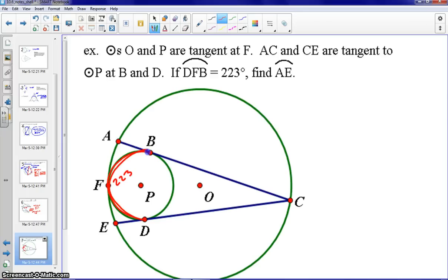Okay, so let's take a look here. First of all, using the fact that we have the measure of arc DFB equal to 223 degrees, we can find, I'm switching colors here, arc BD by subtracting that from 360 and get this to be 137 degrees.